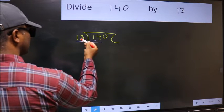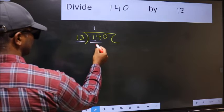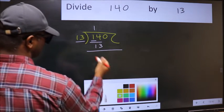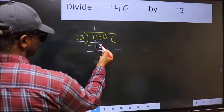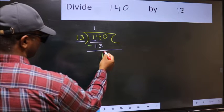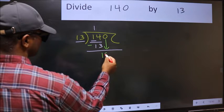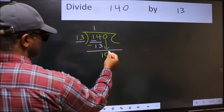A number close to 14 in the 13 table is 13 once, which is 13. Now we should subtract. 14 minus 13 is 1. After this, bring down the next number. So 0 down. After this step,